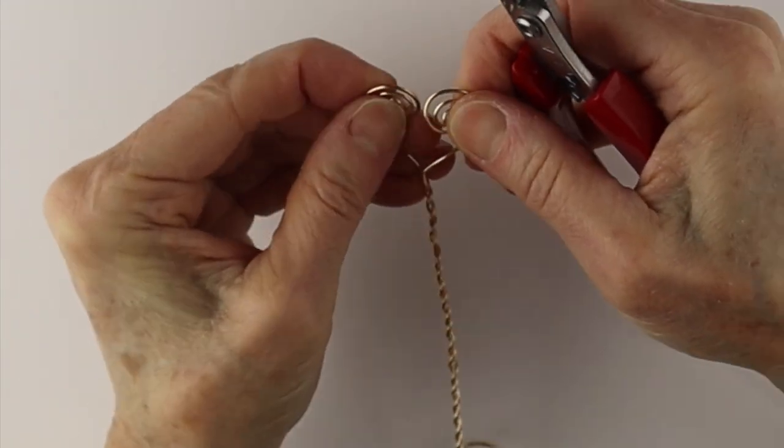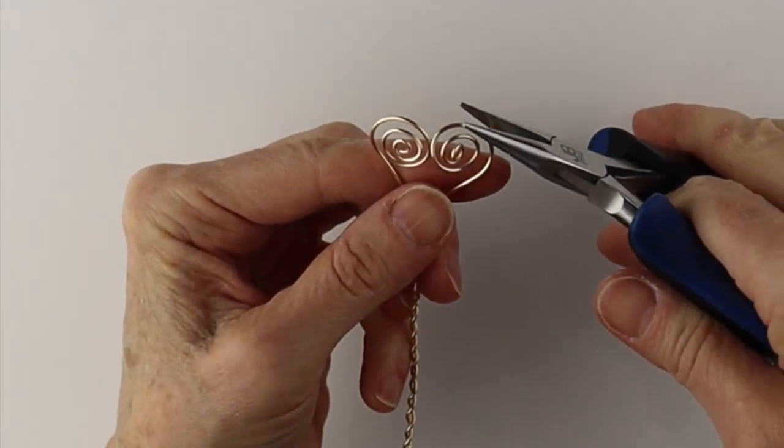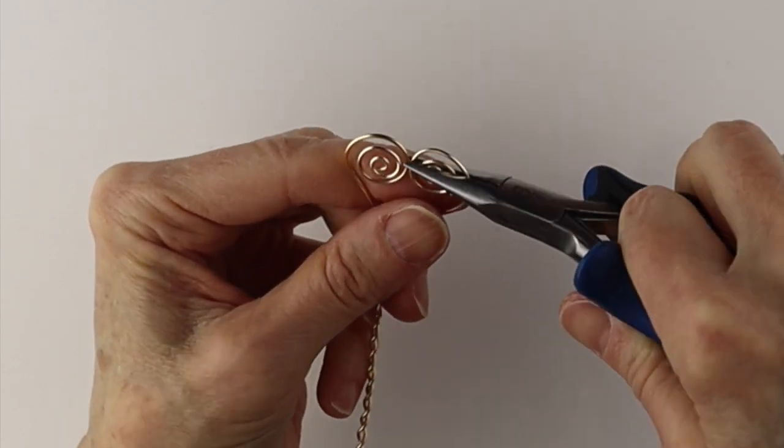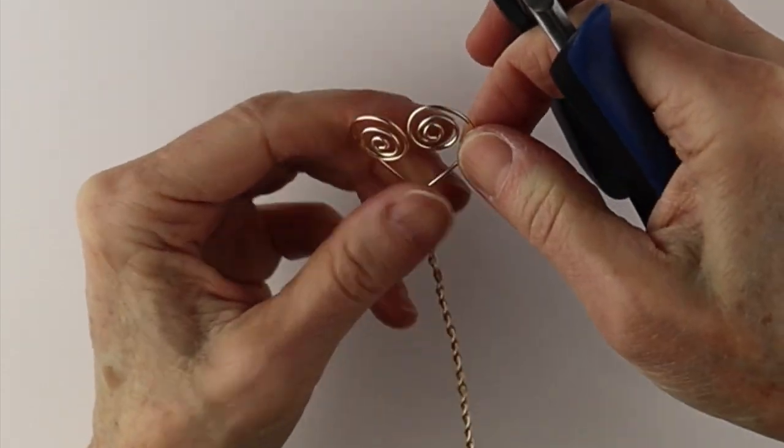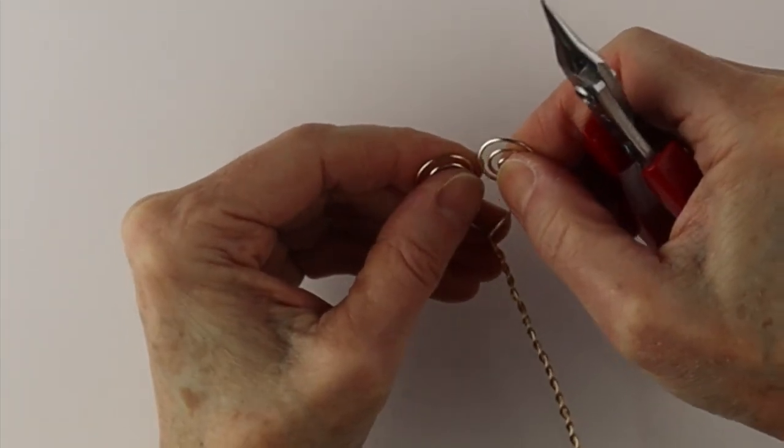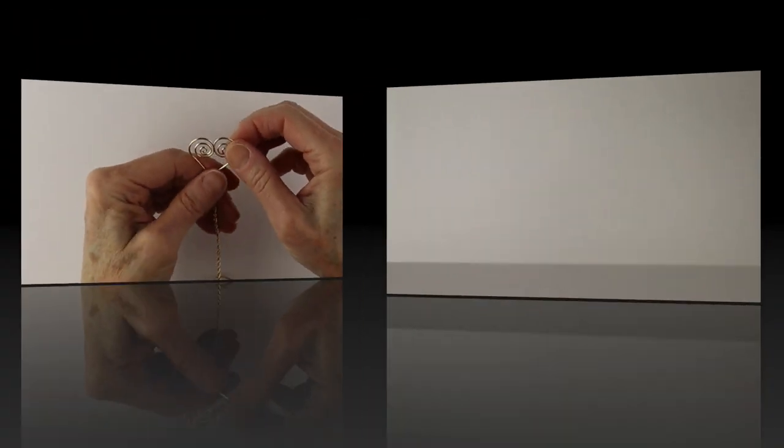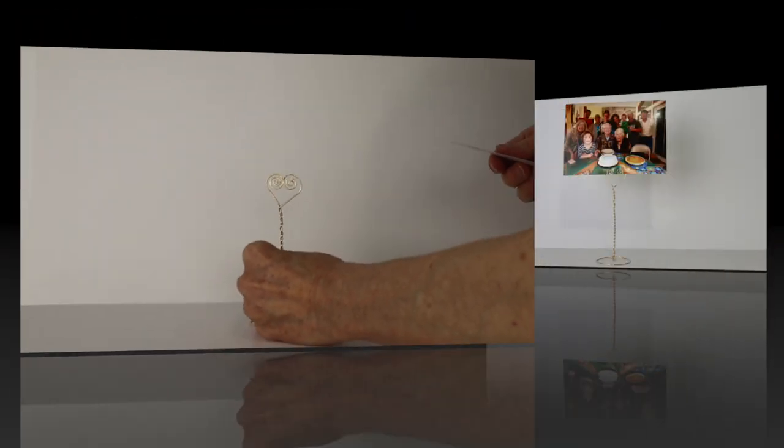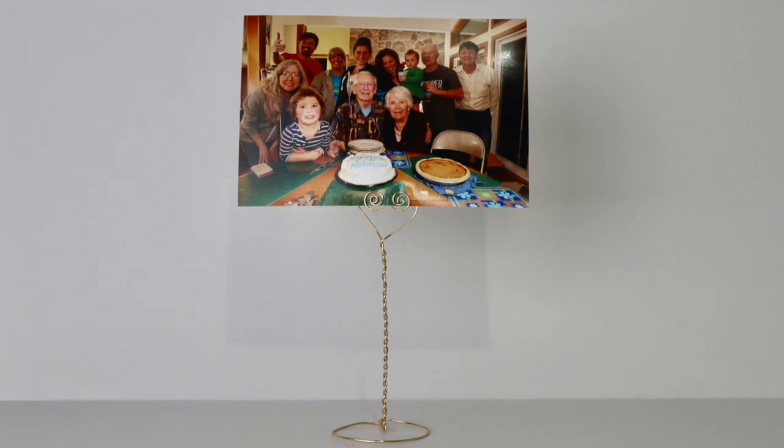You could use your thumb and your fingers as well. And then you can get your flat pliers just to straighten them out a little bit. You could hammer them a little bit if you wanted as well. So we'll just do our last adjustments. Place it on the table and then put on your photo.